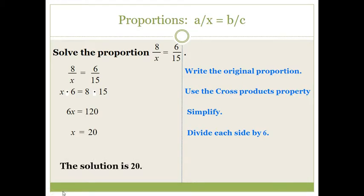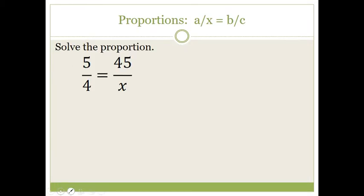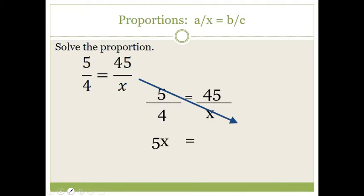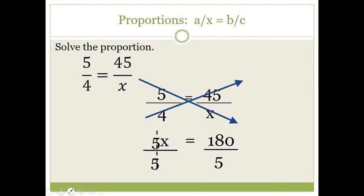Let's do another example. We begin by writing out the proportion, then find the cross products: five times x is five x, and four times forty-five is one hundred eighty. The last step is to divide each side by five to isolate x, and we get x is equal to thirty-six. To verify, you can divide five by four on a calculator and check it equals forty-five divided by thirty-six.